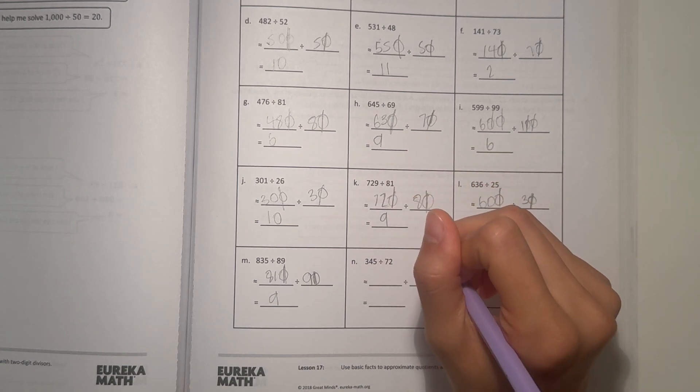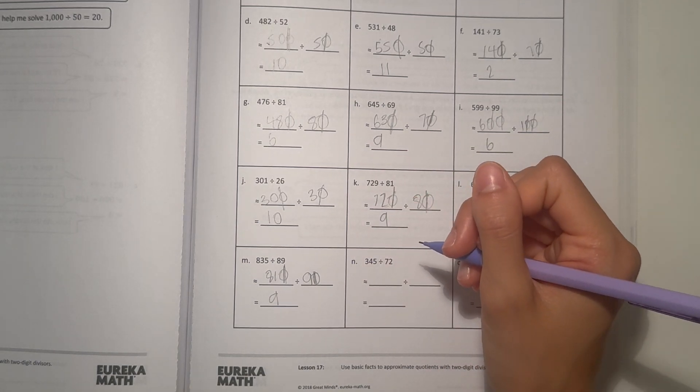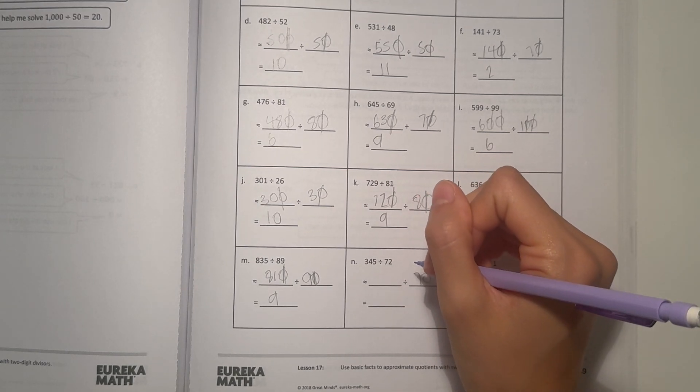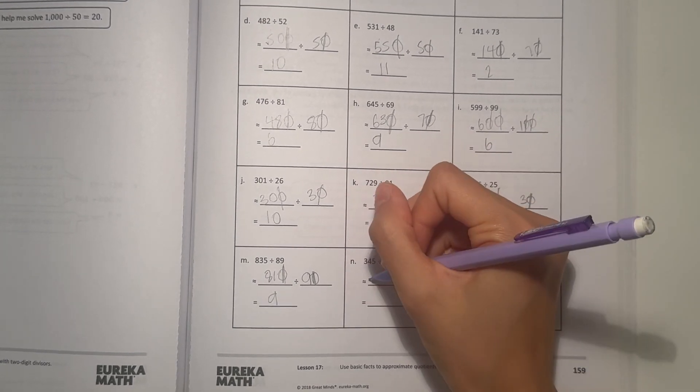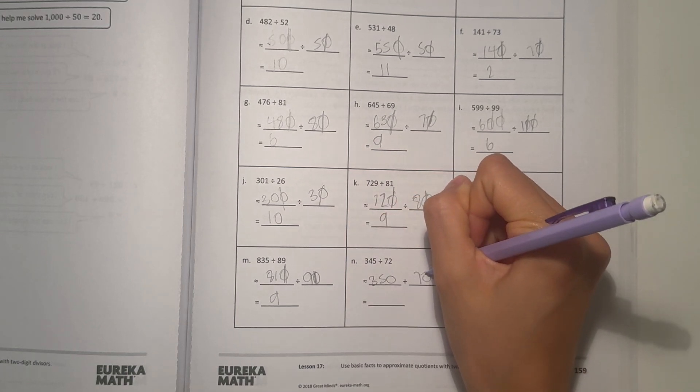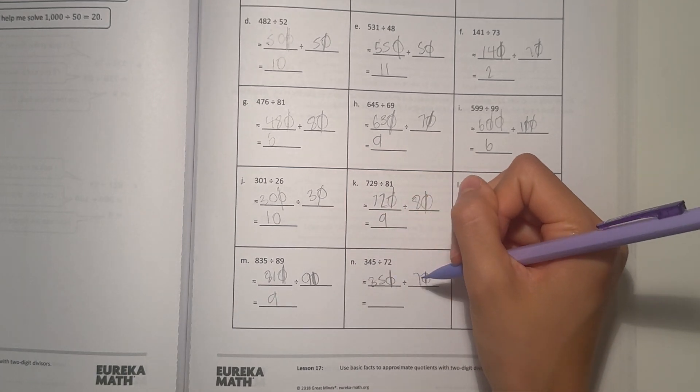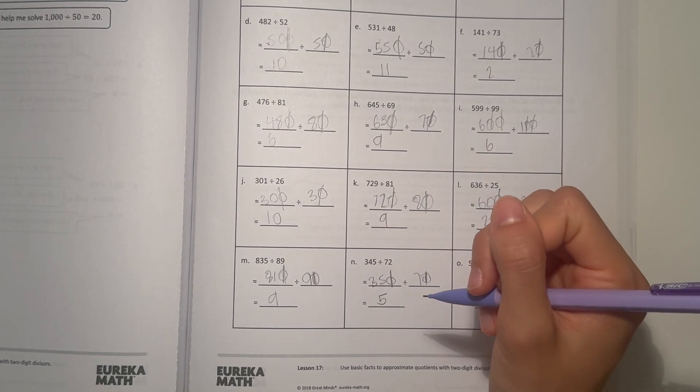345 divided by 72. 72 rounds to 70. 345 can round to 350. Cross off the zeros. 35 divided by 7 is 5. So 5 is our estimate.